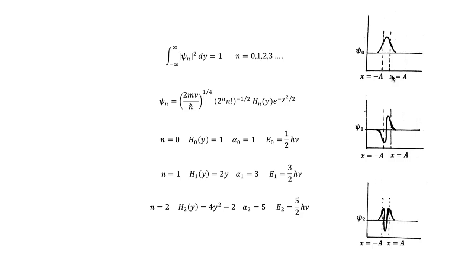But according to quantum mechanics, the particle can penetrate into these forbidden regions beyond -a and a. This means a particle can exceed the amplitude a, which is determined by the energy.